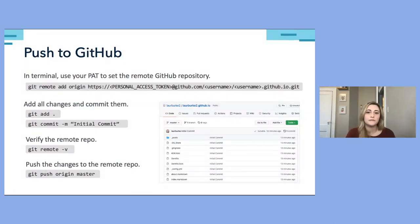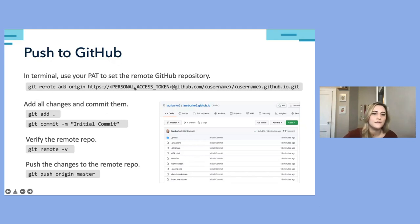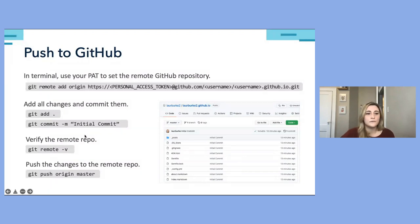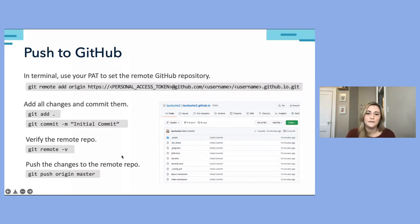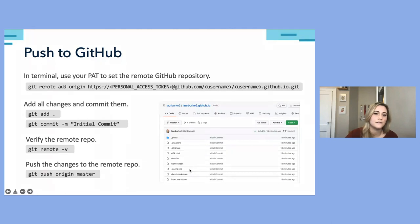Once we've generated a personal access token, we can connect remotely to the repository and push our project to GitHub. Back in the terminal, use your personal access token to set the remote repository using 'git remote add origin' with that token and the repo name. Then add all changes and commit them with an initial commit message. Verify that the remote repository is correct, and then push the site to GitHub. If done correctly, when you open your GitHub repository, you should see all your project files there.